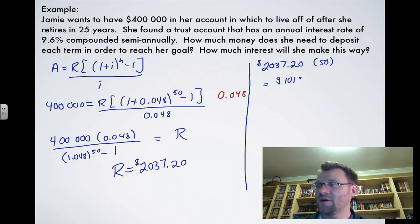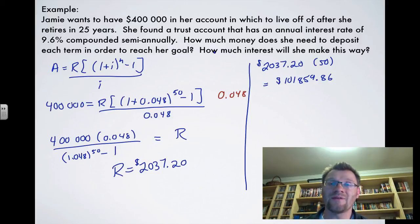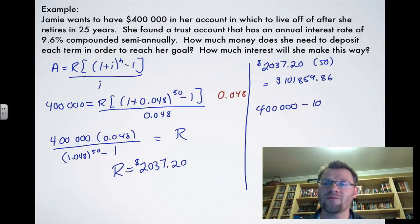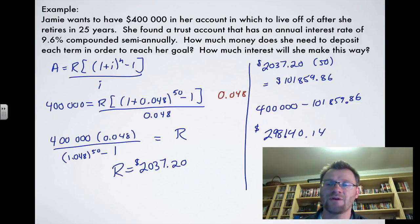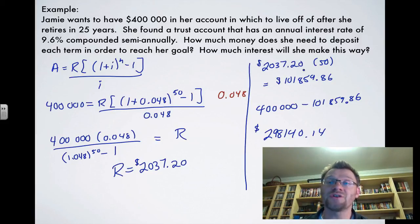Over 25 years Jamie makes 50 deposits of $2,037.20, totalling approximately $101,859.86 deposited. Since the account reaches $400,000, she earns $400,000 − $101,859.86 = $298,140.14 in interest. That's an enormous return, assuming you're fortunate enough to find a 9.6% interest rate compounded semi-annually.